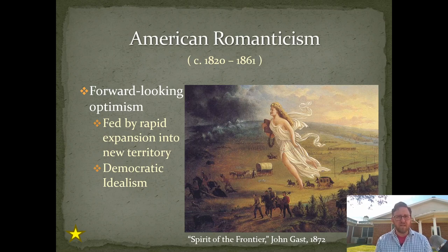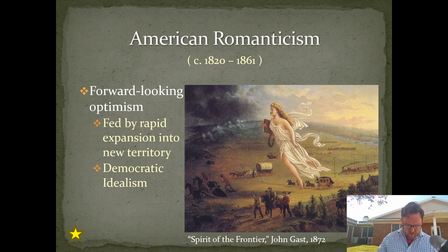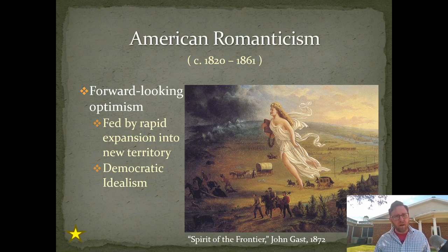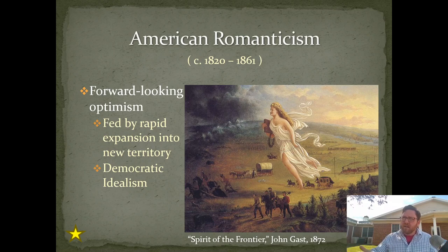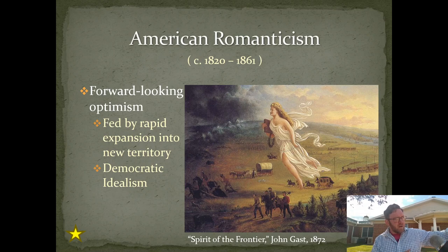This program was called the Donation Land Claim Act. You could get 320 acres of land — or 640 if you were a married white couple. That's a lot of land. Land was — and in many ways still is — wealth; everything we grow and eat comes from land. So this rising sense of nationalism and sense of possibility, as the country seemed to white Americans in the East to be opening up to the West, really affected the mood of writing at the time.